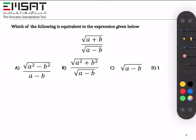Now we will multiply both the numerator and denominator by the square root of a minus b.